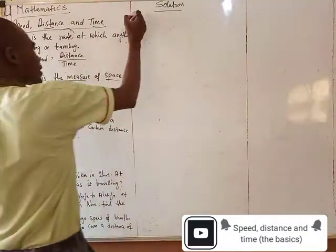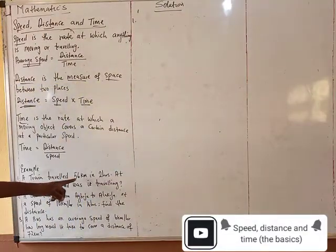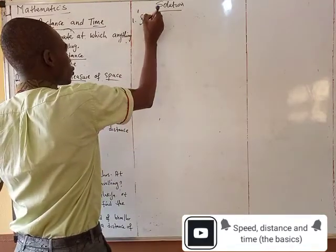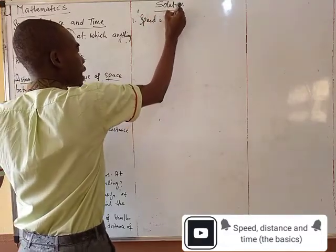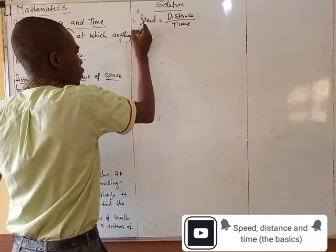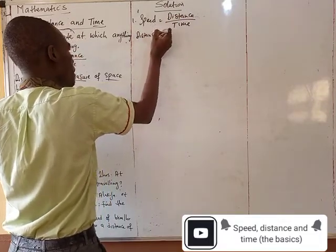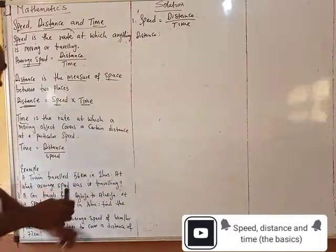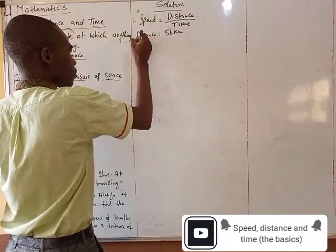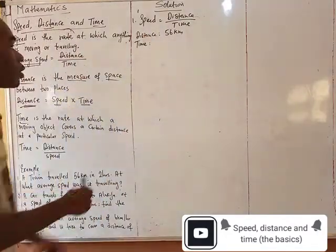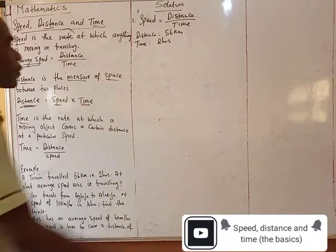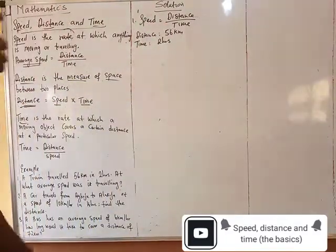Let's look at some example here. A train travels 56 kilometers in 2 hours. At what speed was it traveling? Now, let's say we should find the speed. Speed is what? Distance over what? Time. Of each of your distance, your distance is what? 56 kilometers. And your time is 2 hours. Am I communicating? Your distance is 56 kilometers. Your time is what? 2 hours.